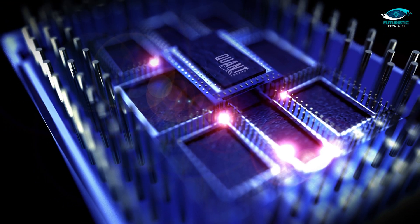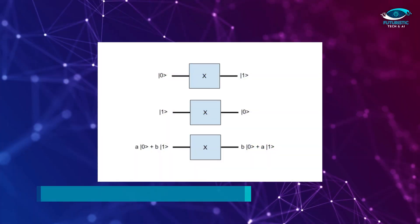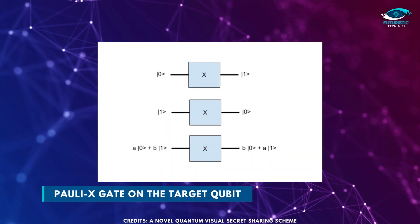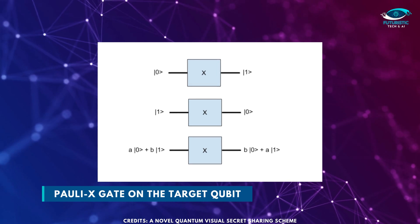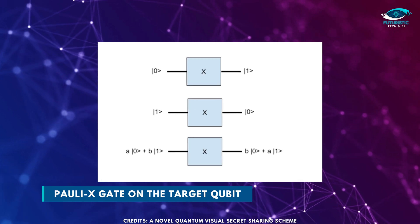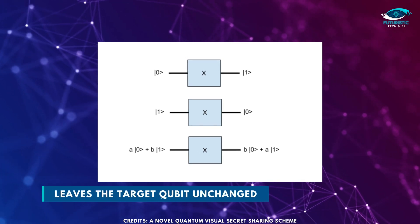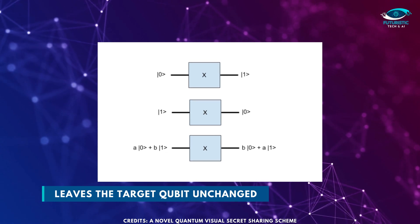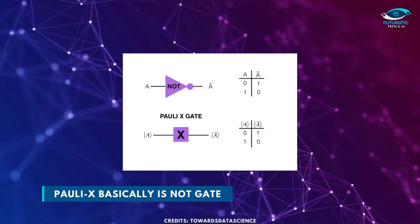Expressed in basis states, the CNOT gate leaves the control qubit unchanged and performs a Pauli-X gate on the target qubit when the control qubit is in state 1. Leaves the target qubit unchanged when the control qubit is in state 0. Pauli-X basically is NOT gate.